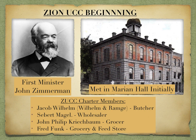Zion Church was split from this first German evangelical church at the top of the hill. The charter members of the first church were Jacob Wellham, a butcher; Siebert Mogul, a wholesaler; John Philip Kreckenbaum, a grocer; and Fred Funk, a grocer and feed store owner. There is no documentation concerning the cause for the split. It took several years for the split between the two churches to heal. During that split, Zion UCC was not a member of the Evangelical Senate of North America.